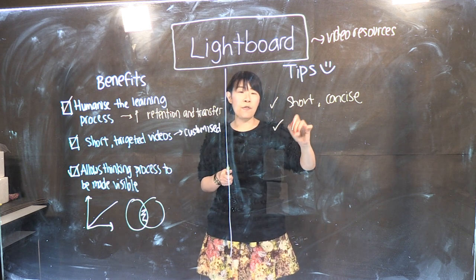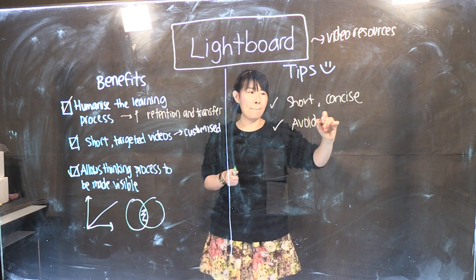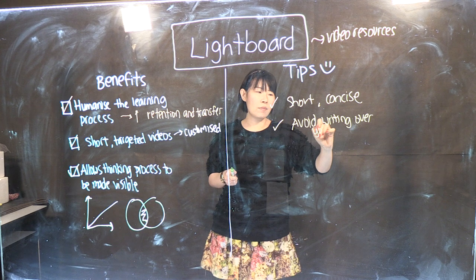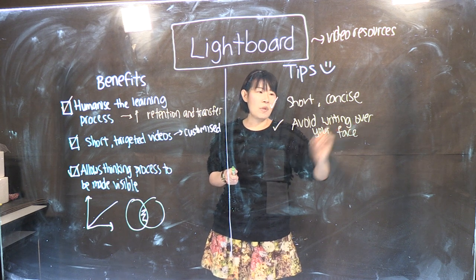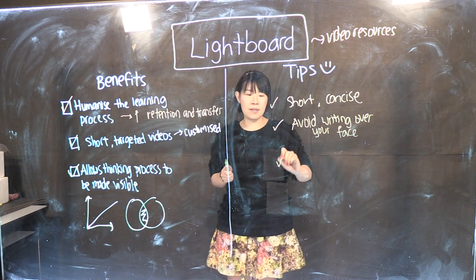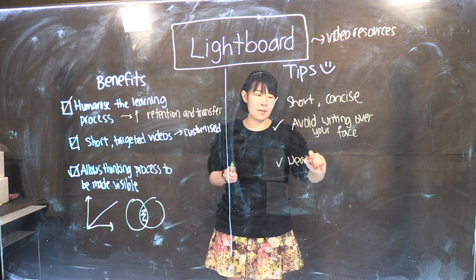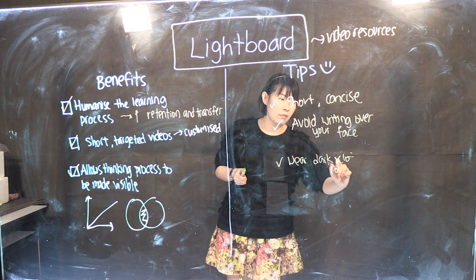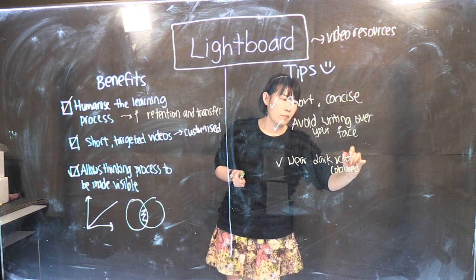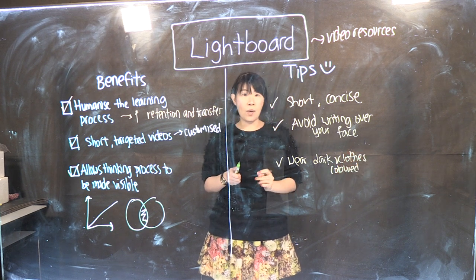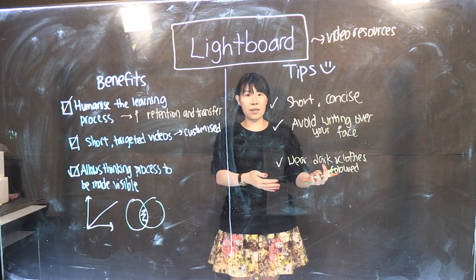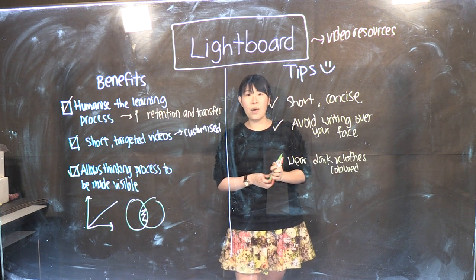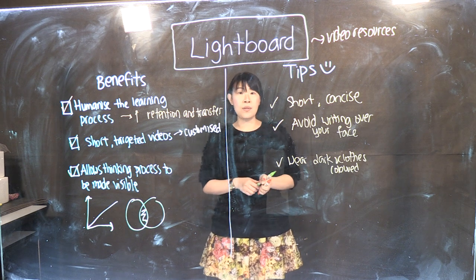The next tip is to avoid writing over your face. And for the last point, wear dark coloured clothes, because you will not want words to be difficult to read against the dark coloured background. With this, I hope that it will get you started on using the light board.